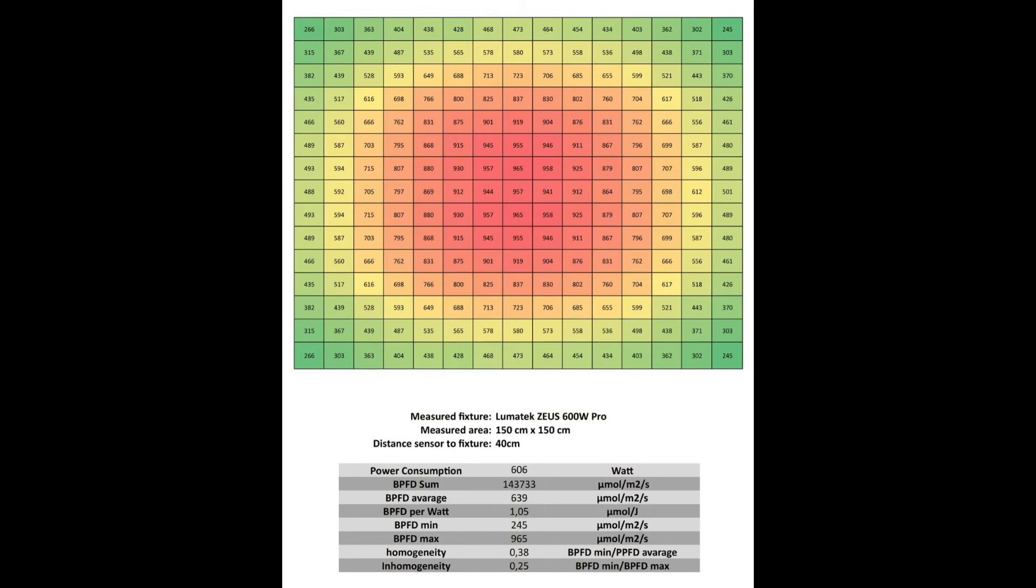Here we have the light plot of the Lumatech SUSE 600 Watt Pro in the 150 centimeter tent at a measuring distance of 40 centimeter. The measured power consumption was 606 watts that happened at a power factor of 0.948.